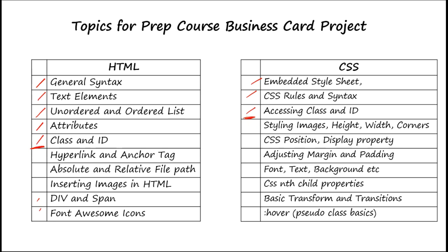We'll keep marking topics we've covered so we have a clear idea of progress. Other CSS topics we would cover include styling images, display properties, adjusting margins and padding, font, text, and background properties. There's also a very amazing nth-child property in CSS, as well as transformations and transitions — like what you saw on the Facebook, Instagram, and Twitter icons when hovering. The hover pseudo-class basics will also be covered before building our business card project.